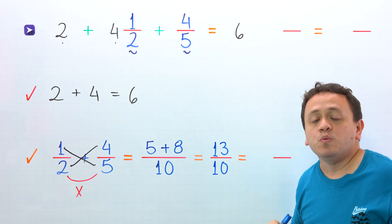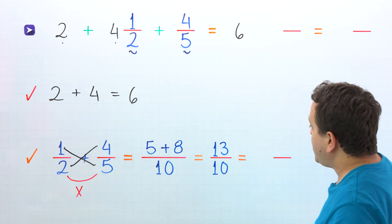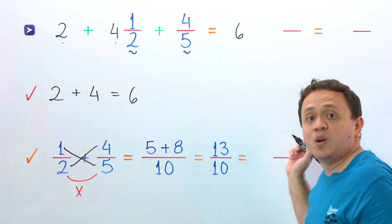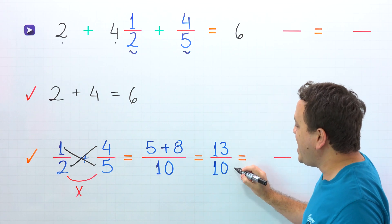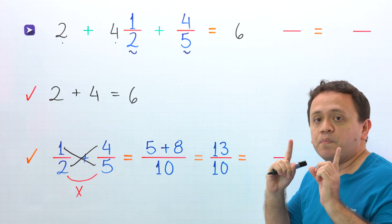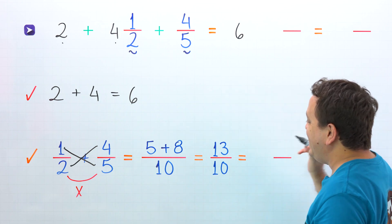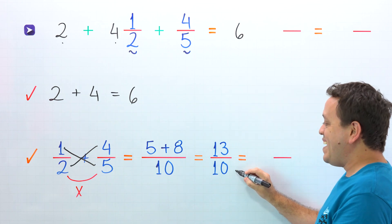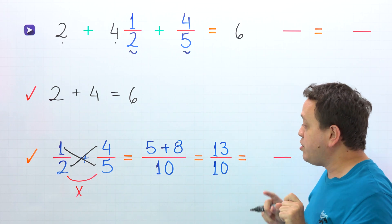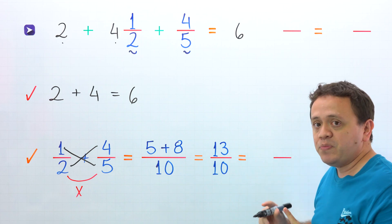At this point, we should remember improper fractions. An improper fraction is a fraction where the numerator, the top number, is greater than or equal to the denominator, the bottom number. 13 tenths is an improper fraction, given that the numerator 13 is greater than the denominator 10. And since we don't want an improper fraction in the final answer, we need to convert this improper fraction to a mixed number.